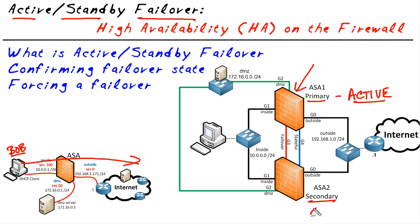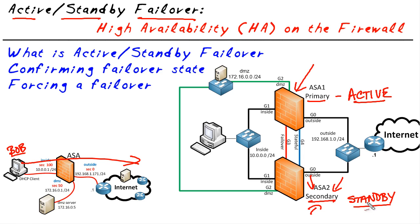So what is the secondary doing? It's the job a lot of people wish they had — being the secondary, it doesn't do much except make sure the active system is okay and still forwarding traffic. It takes the role of Standby, simply checking the interfaces and communicating across the failover cable to make sure the other unit is fine.